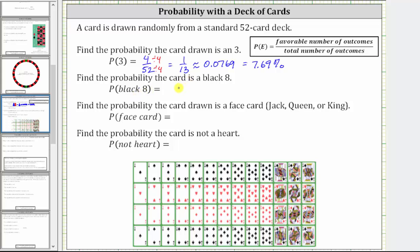Next, we're asked to find the probability the card is a black 8. Going back to the deck of cards, we have the aces, twos, threes, fours, fives, sixes, sevens, and eights. Notice there are two black eights: an 8 of spades and an 8 of clubs.